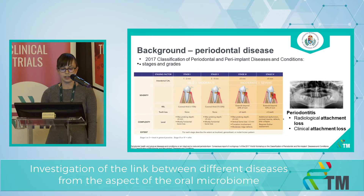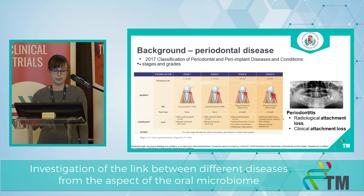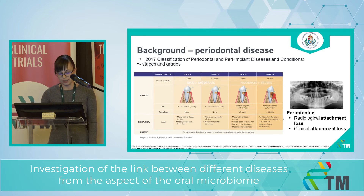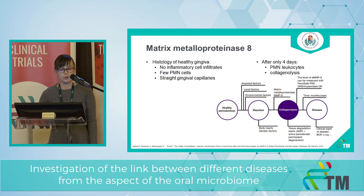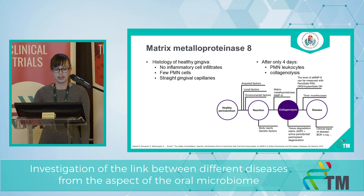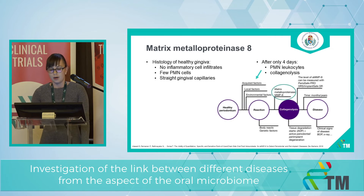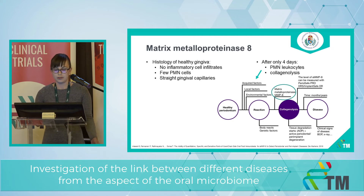In 2016, a new classification of periodontal and peri-implant diseases and conditions was introduced, using different stages and grades to describe periodontitis. We chose matrix metalloproteinase 8 because histologically, in healthy gingiva there are no inflammatory cells — only a few PMN cells. But after just four days of disturbing factors like not brushing, PMN leukocytes appear in the gingiva and collagen degradation starts.